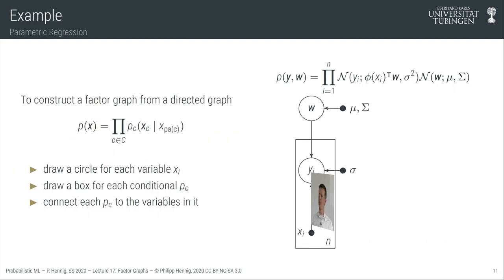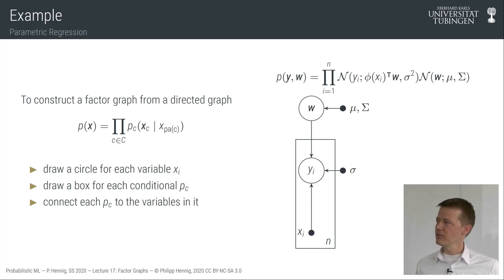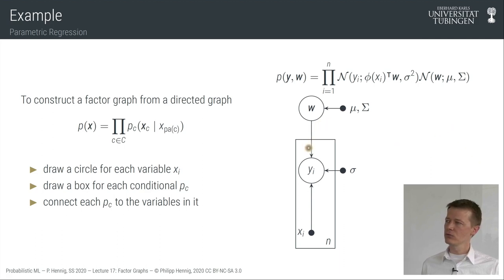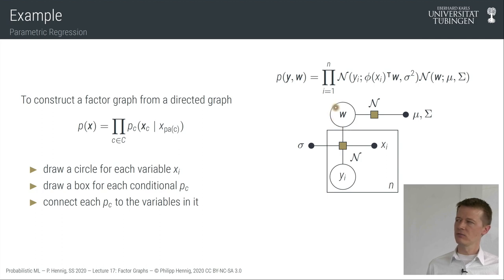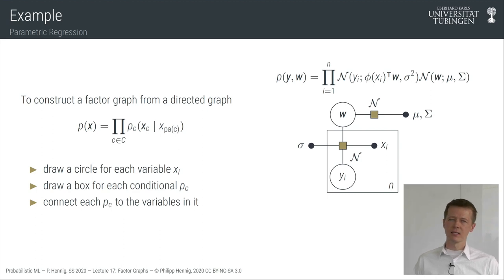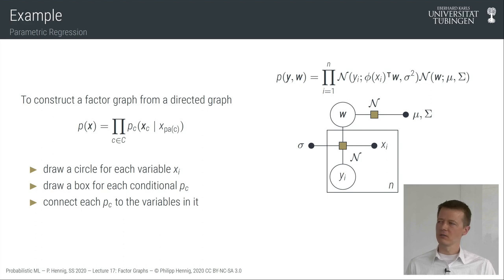To construct a factor graph from a directed graph, you take your existing variables and for each term in the factorization—each conditional probability distribution over children and parents—you draw one factor node and connect it to all the variables entering that function. For an undirected graph, it's even easier: you create factor nodes for every potential function in the factorization and draw the corresponding connections.